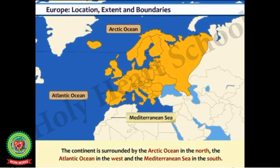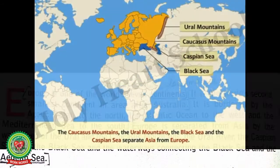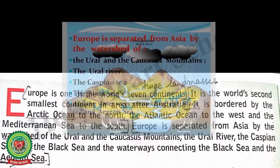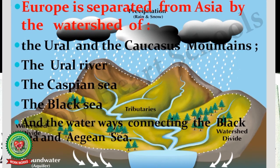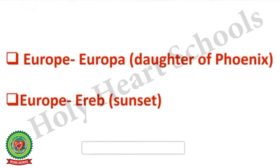Europe is one of the world's seven continents. It is the world's second smallest continent in area, after Australia. It is bordered by the Arctic Ocean to the north, the Atlantic Ocean to the west, and the Mediterranean Sea in the south. Europe is separated from Asia by the watershed of the Ural and Caucasus Mountains, the Ural River, the Caspian Sea, the Black Sea, and the waterways connecting the Black Sea and the Aegean Sea.